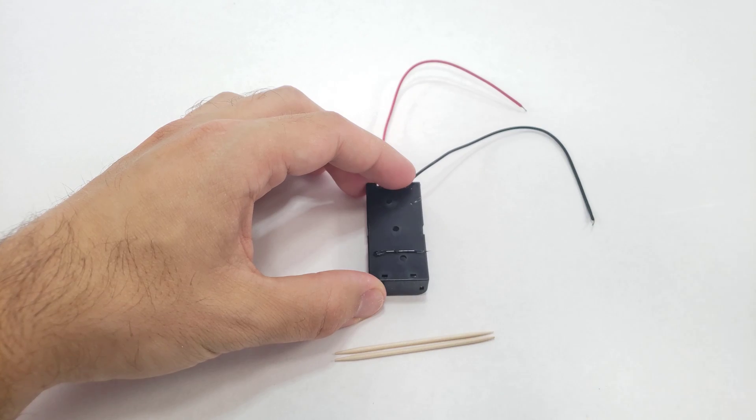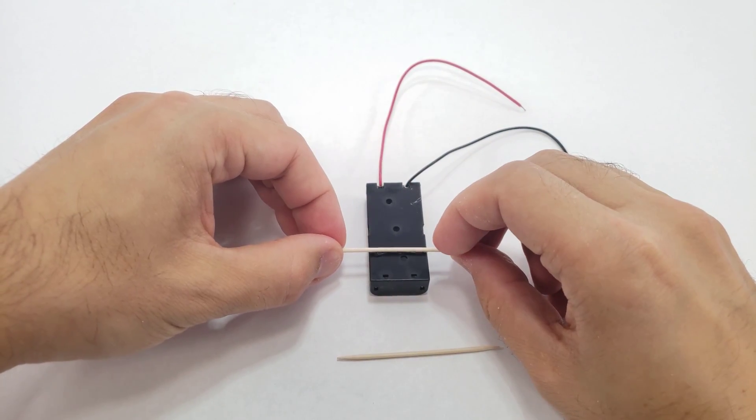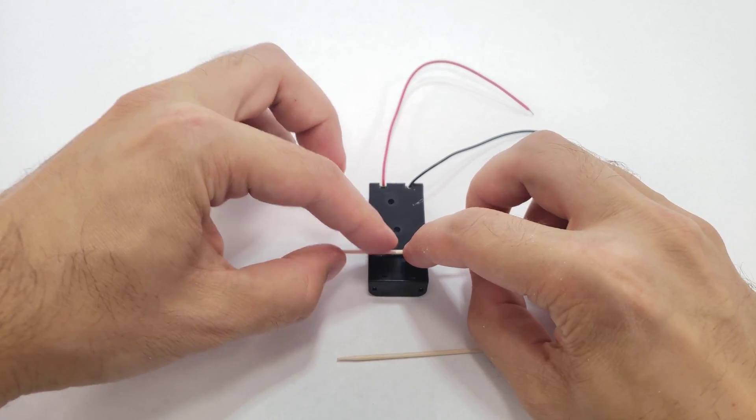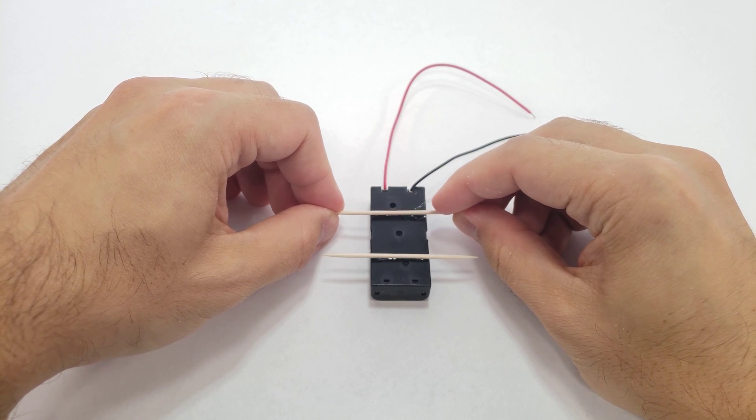Next, use hot glue to attach the two toothpicks to the bottom of the battery holder to form axles. Make sure the toothpicks are parallel to each other.